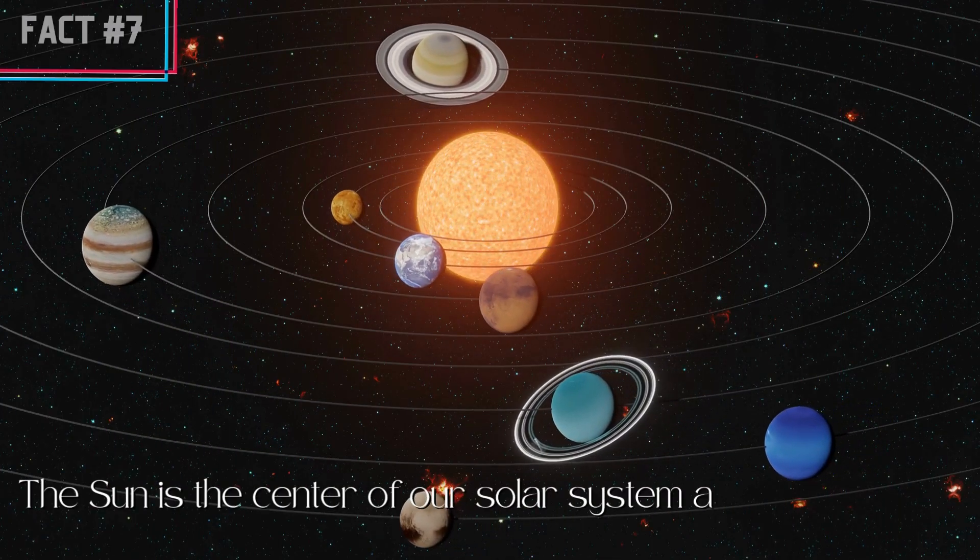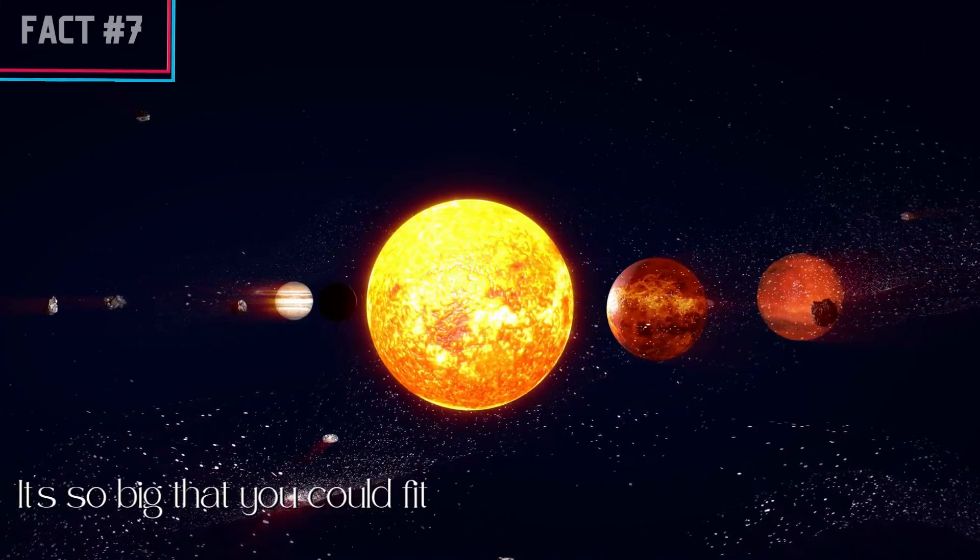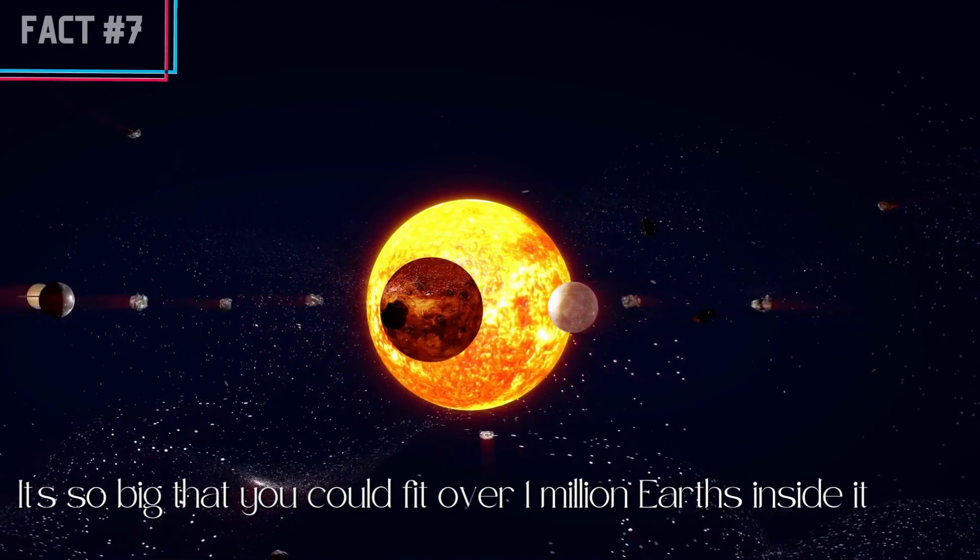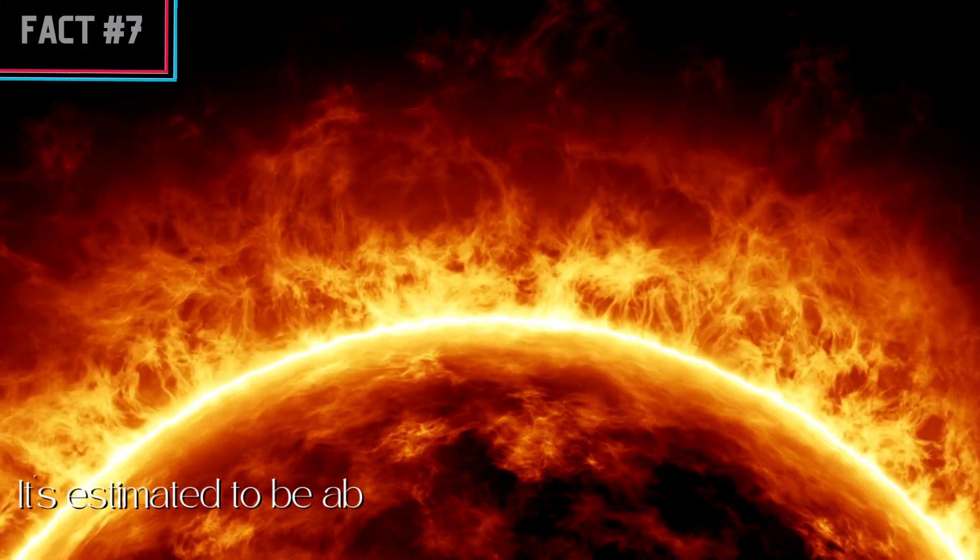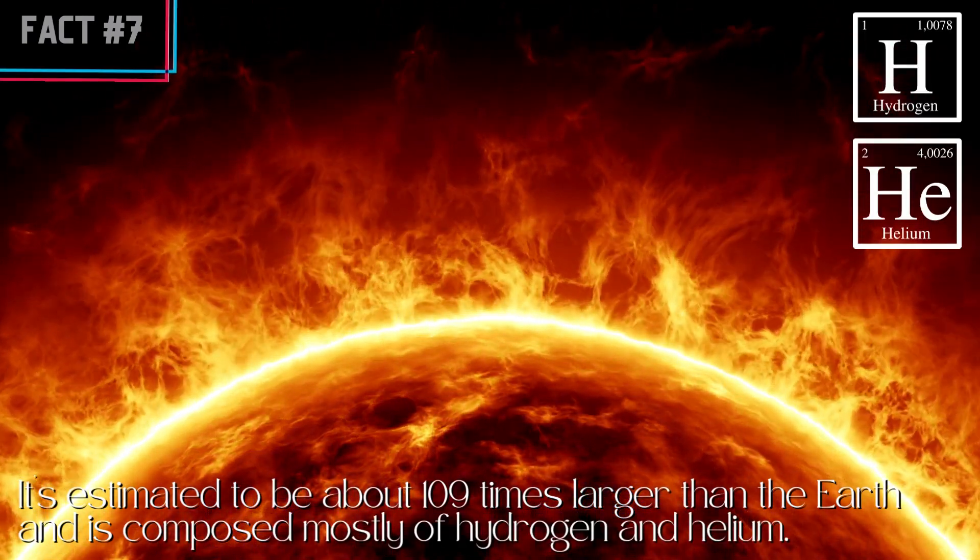The sun is the center of our solar system and is one of the largest objects in the universe. It's so big that you could fit over 1 million Earths inside it. It's estimated to be about 109 times larger than the Earth and is composed mostly of hydrogen and helium.